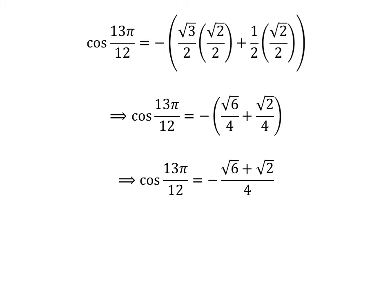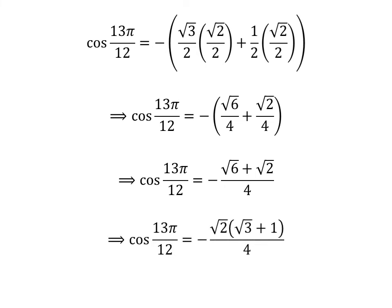As the denominator of both fractions in the above expression is the same, cosine of 13 times pi upon 12 is equal to minus of square root of 6 plus square root of 2 upon 4. Taking out the common factor square root of 2 in the numerator gives us cosine of 13 times pi upon 12 is equal to minus of square root of 2 times square root of 3 plus 1 upon 4.